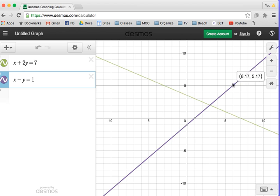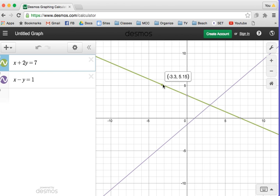Keep in mind, every ordered pair on the purple line is a solution to this equation, X minus Y equals 1. And every ordered pair on the green line is a solution to X plus 2Y equals 7. Now, to solve a system of equations, it means we want to find a solution that makes both of these equations true.